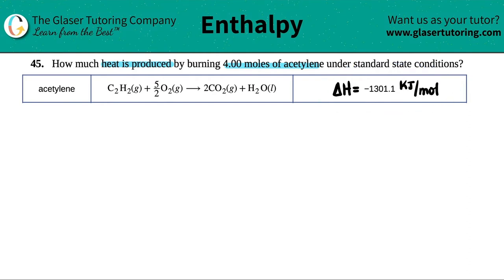So let's just write this out. I'm going to say that for every one mole of acetylene, C2H2, we will produce negative 1,301.1 kilojoules.